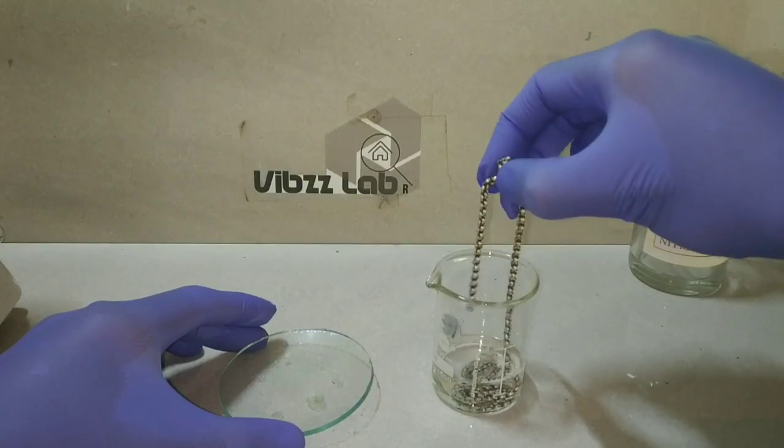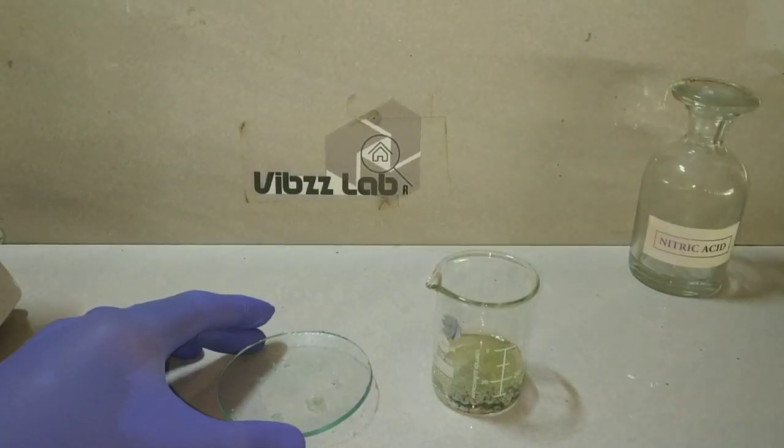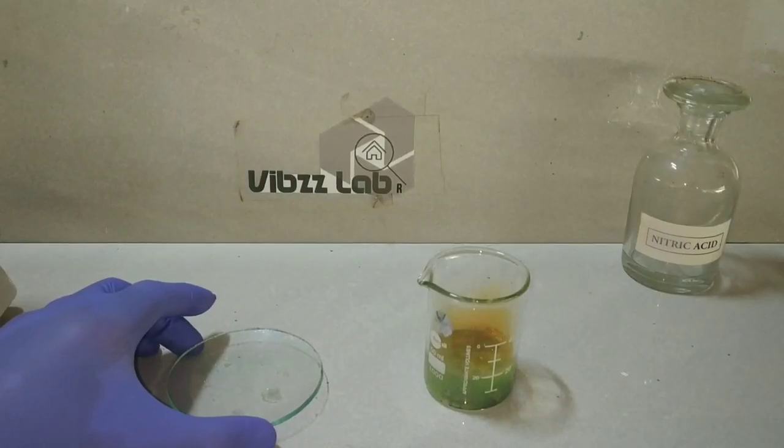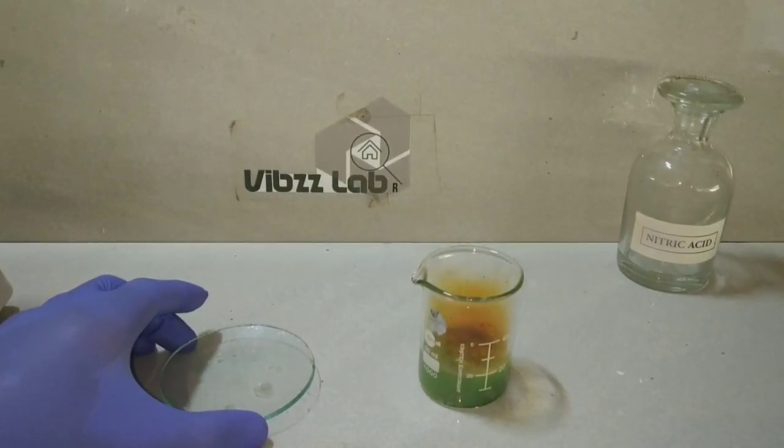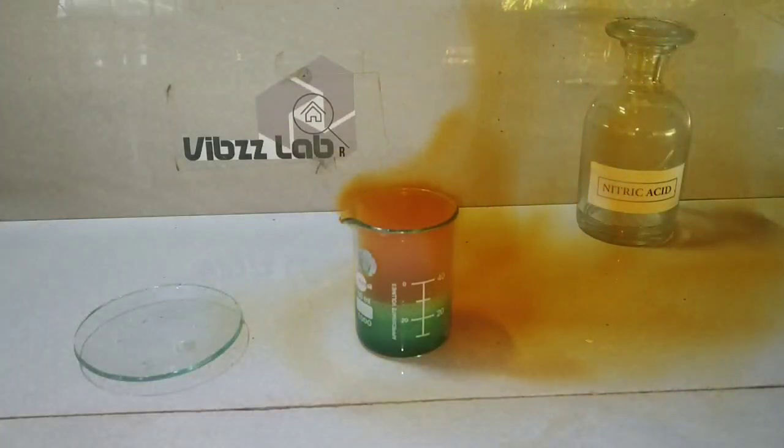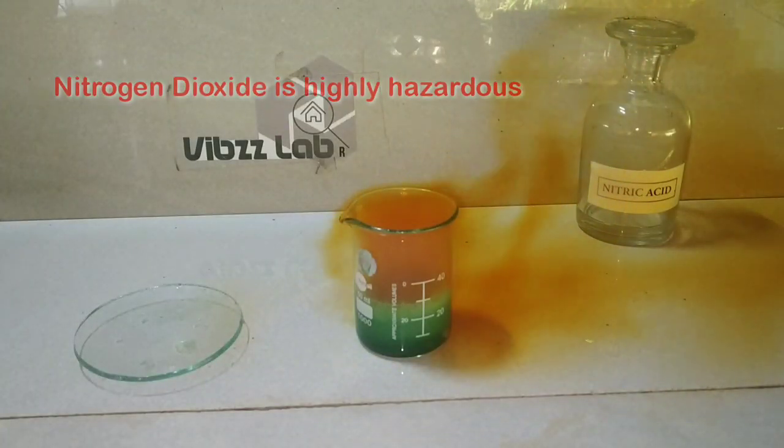So the first step in extraction of silver metal is to dip this in concentrated nitric acid. I have 10.8 grams of silver ornament by weight and I have taken about 40 ml of concentrated nitric acid.